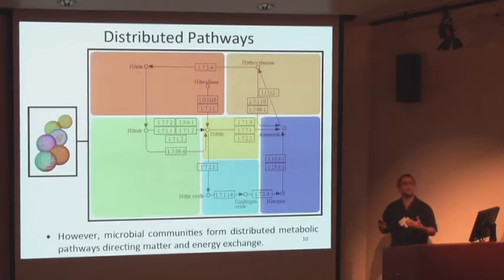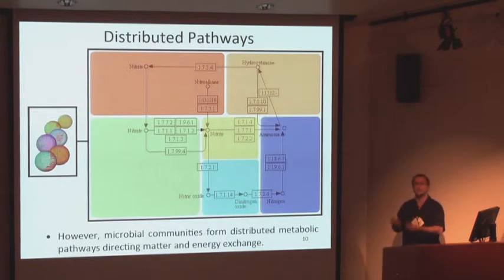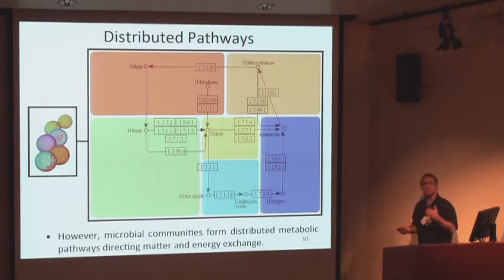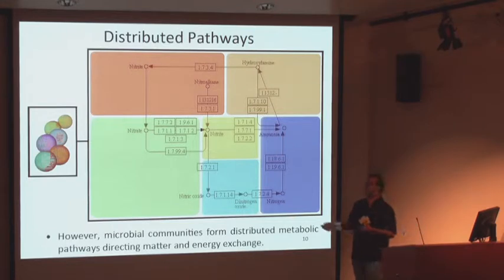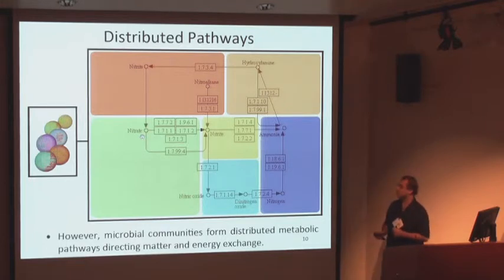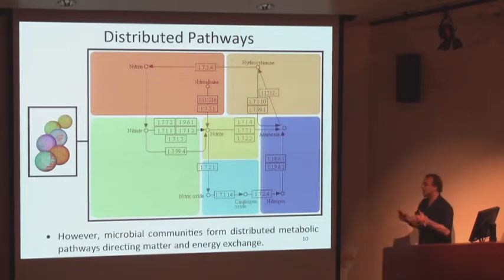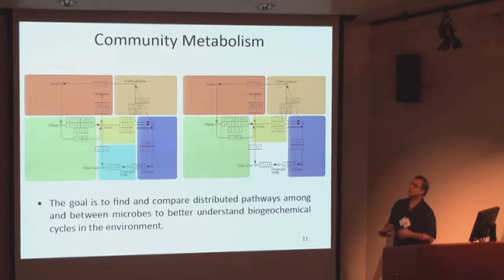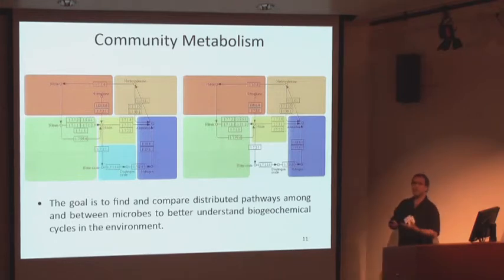The situation changes when we move into the microbial world and try to understand the relationships among different cellular components of an ecosystem. We have to look at the community to some extent as a whole. Metabolism can be thought of as a distributed process where a particular cell may contribute one part of a reaction, the product of which may be used as a starting point through the entire community. We want to understand how these forms of distributed metabolic pathways arise and how they're regulated in naturally occurring communities. This brings us to the concept of community metabolism, where the goal is to find and compare these distributed pathways among microbes in the environment to better understand biogeochemical cycling.